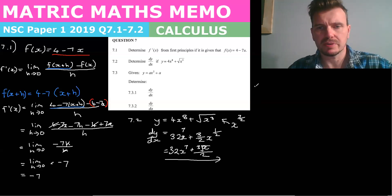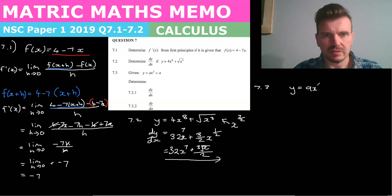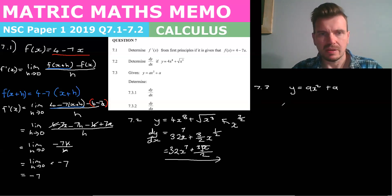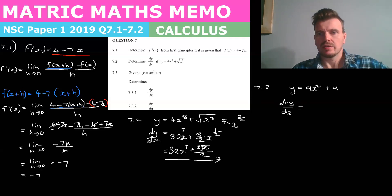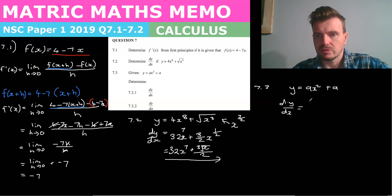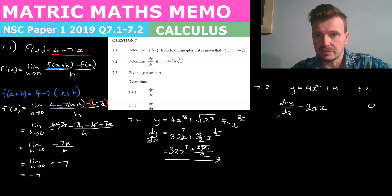Now 7.3. They've given you y equals ax squared plus a, and they want you to find dy/dx. So we just imagine that a is a number — a could be 2. So dy/dx: 2 times a gives 2a, and we take 1 off the power of 2, so it becomes x to the 1. And a is a constant so the second term, plus a, just goes away and becomes 0. So dy/dx equals 2ax, and that is your final answer for 7.3.1.